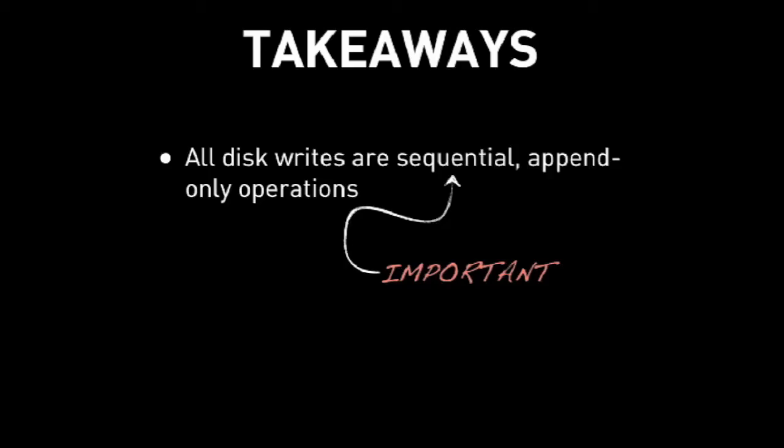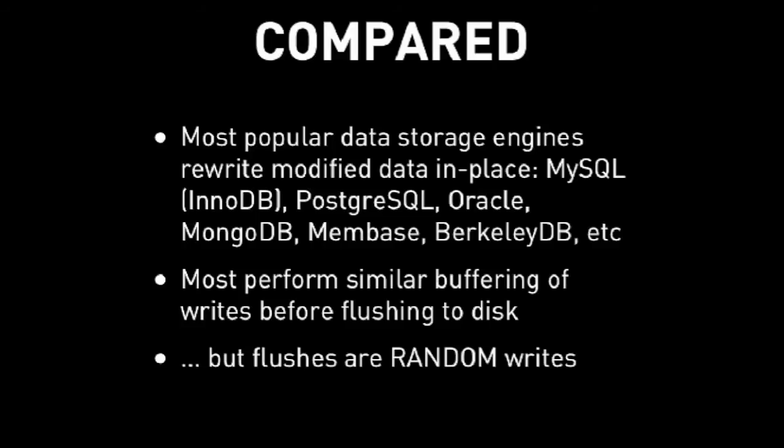Comparatively, most popular data storage engines use B-trees and systems that rewrite modified data in place. When they're doing a modification, they actually go to the data where it sits and modify it. They do a little bit of buffering, like we do with our memtables, before it actually gets written out — but it's still random IO.